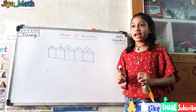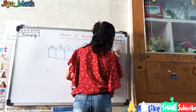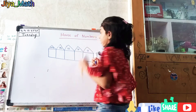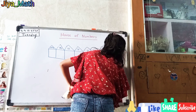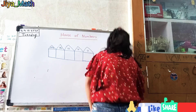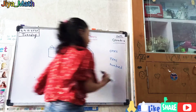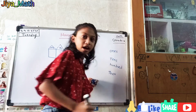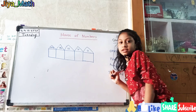So let's write. So 1s is O-N-E-S. 10s is T-E-N-S. 100 is H-U-N-D-R-E-D. 1000 is T-H-O-U-S-A-N-D. 100,000. And one more is 10,000.